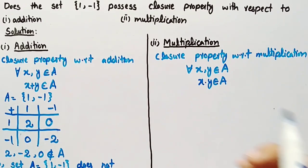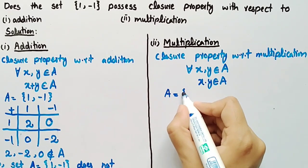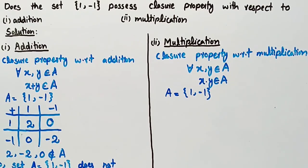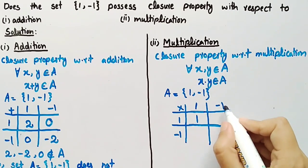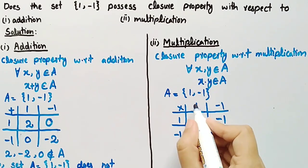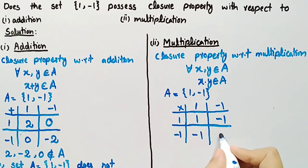Now let's name the set {1, -1} as A, so we can write A = {1, -1}. We will draw a table in which we will multiply each element of set A one by one with each other element of set A. Taking the products: 1 × 1 = 1, 1 × (-1) = -1, (-1) × 1 = -1, and (-1) × (-1) = 1.